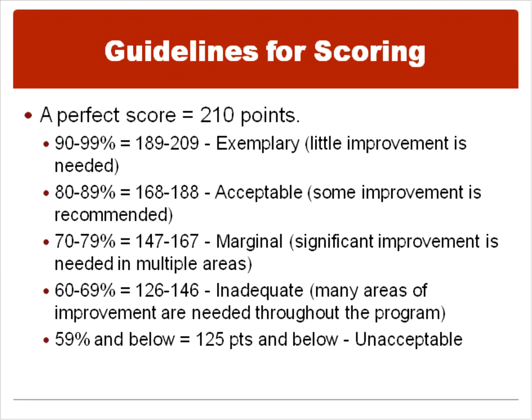A perfect score would be 210 points. We broke it into rankings: an exemplary program would be 90 to 99% of those points, or 189 to 209 points, where little improvement is needed. 80 to 89% would be acceptable where some improvement is recommended, and so on down the line. Anything scoring below 59%, or below 125 points, would be unacceptable. But really, the good part is it just gives you a place to work from and be able to improve.